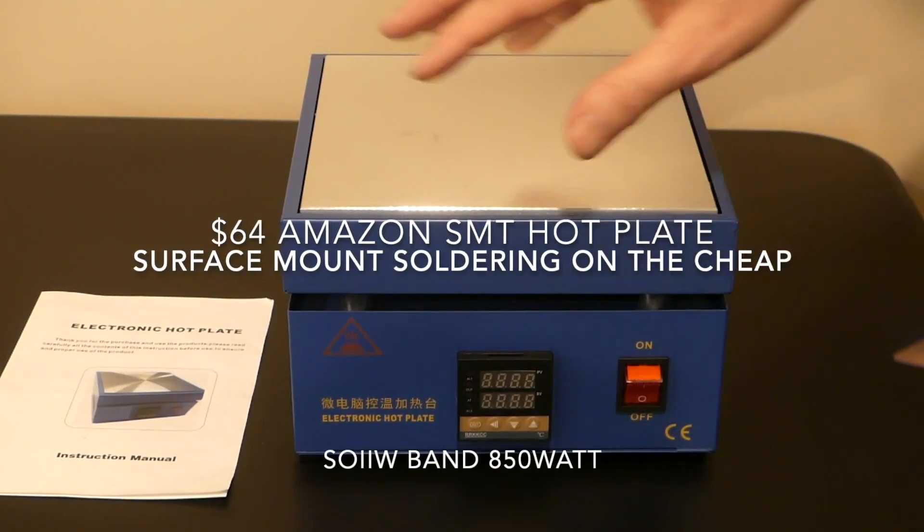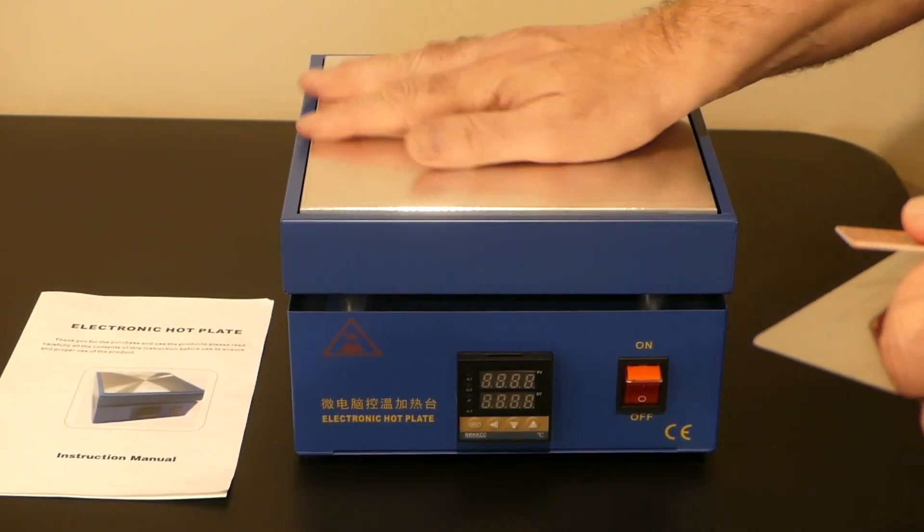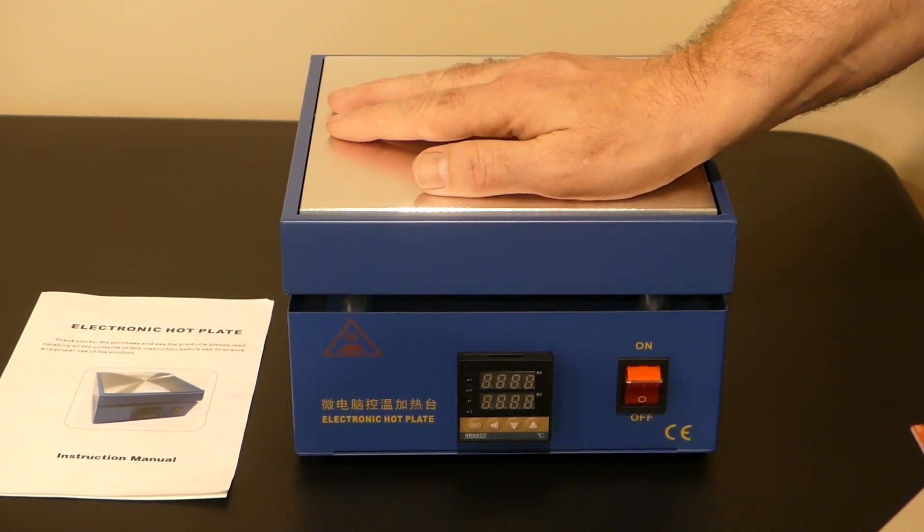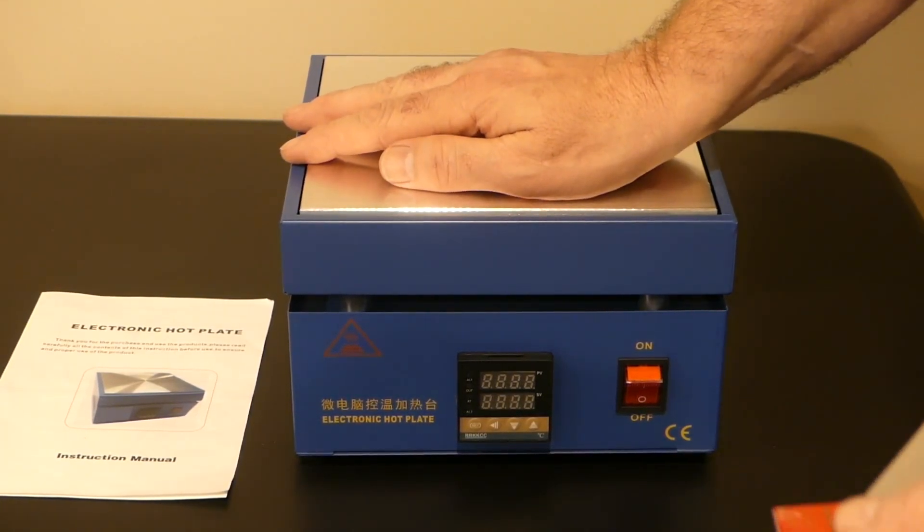Today I'm going to review this 200 by 200 millimeter hot plate. This is available from Amazon for $64 shipped. It goes up to 400 degrees Celsius.